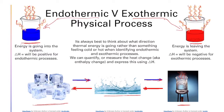We can quantify or measure the heat change that occurs in these processes, and we express it using delta H, which represents a change in enthalpy, or a change in heat for that system. For an endothermic process, delta H is going to be positive because we're pulling energy into the system. For an exothermic process, delta H is going to be negative because that system is losing thermal energy.